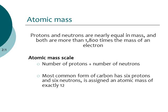For example, looking at carbon — the most common form of carbon has six protons and six neutrons. So it has an atomic number of six, and the atomic mass is twelve: six protons plus six neutrons equals twelve.